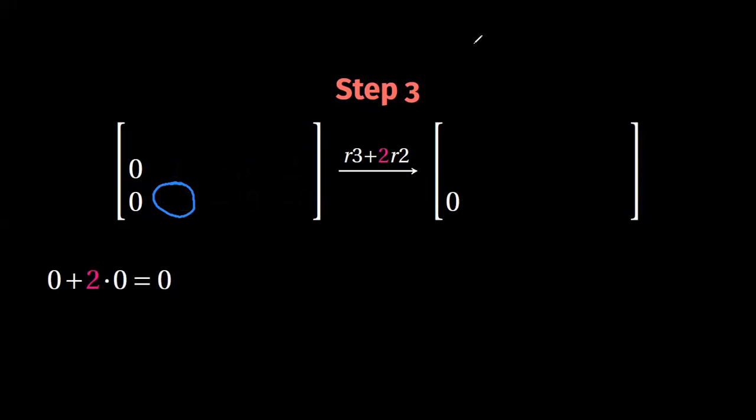First, we do zero plus two times zero, which is of course equal to zero. Then the element that we would like to eliminate, that is minus two plus two times one, which is equal to zero.